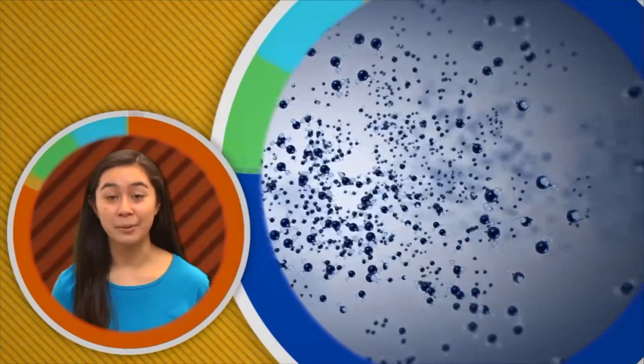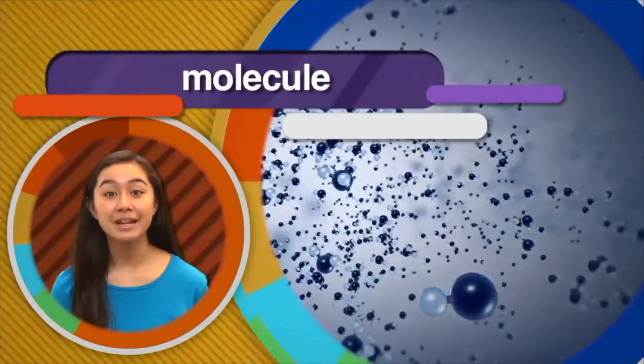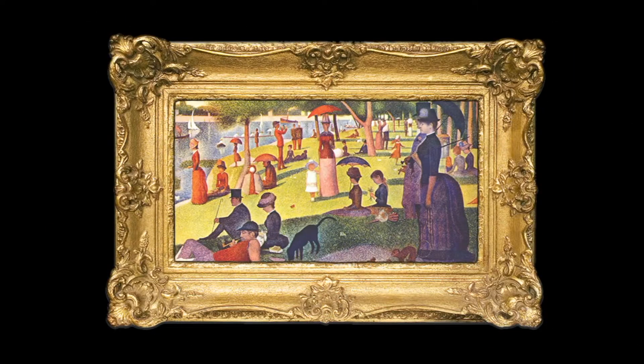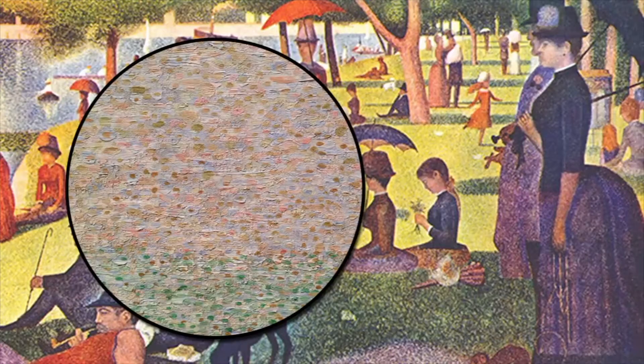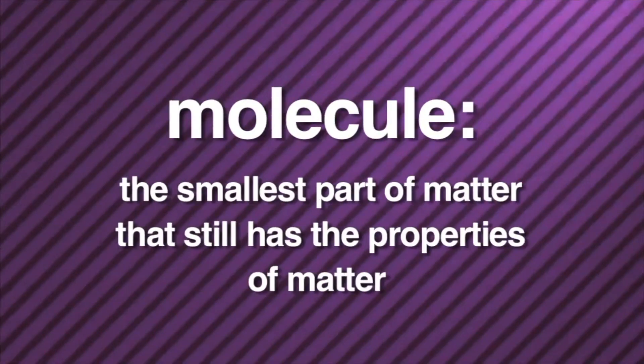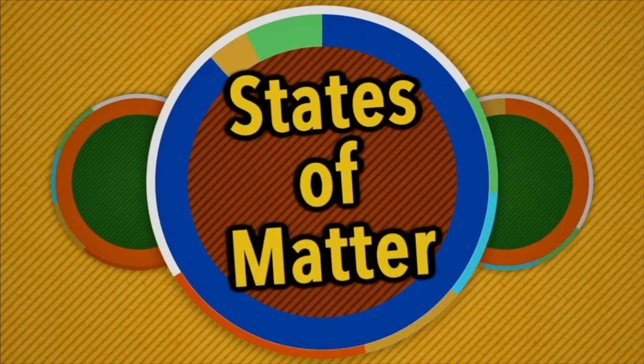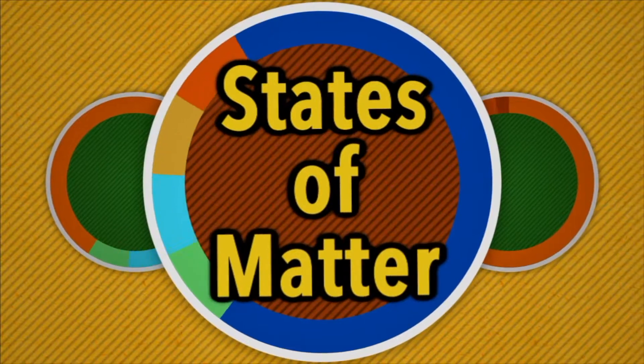Matter may have many different properties, but all matter is formed in the same way — from tiny particles called molecules. To better understand how molecules make up all matter, take a look at this painting. From a few feet away, you see a picture of people in a park. However, if you look real close, you'll see that the picture is really made up of small dots of paint. All matter is made up of particles called molecules. A molecule is the smallest part of matter that still has the properties of matter.